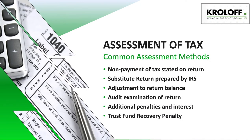There are many ways a tax can be assessed. The first is fairly obvious: when a taxpayer files a return showing a tax balance due but doesn't pay that tax when due, that amount will be assessed against them. Likewise, if a taxpayer simply does not file a return but is required to, the IRS will eventually file a substitute return on their behalf. This is rarely in the taxpayer's best interest, as the IRS only uses information reported by third parties, like W-2 or 1099 earnings.